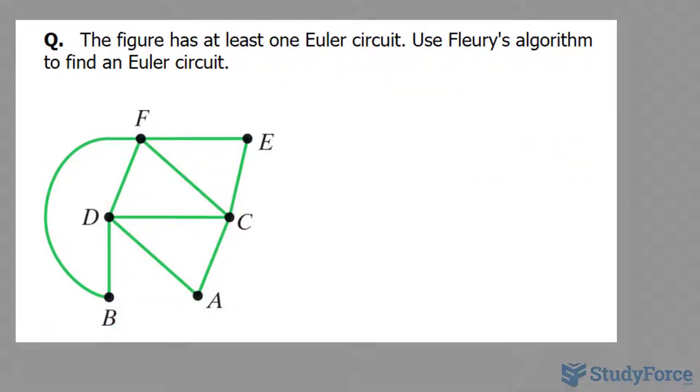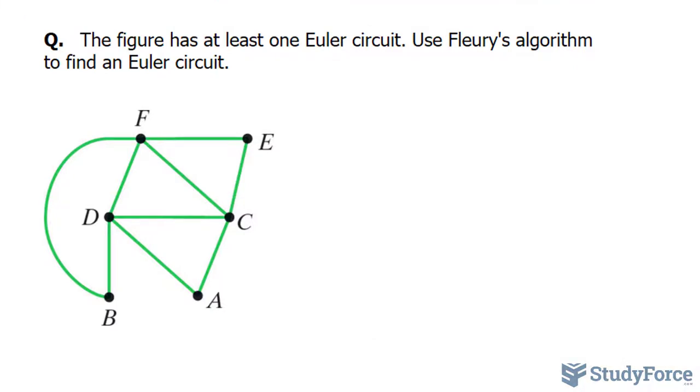The question asks, the figure has at least one Euler circuit. Use Fleury's algorithm to find an Euler circuit. So we can start anywhere because all of these are even. And in case you're still confused by that idea, vertex E has two edges. So this is even with a degree of two.